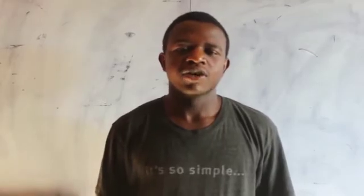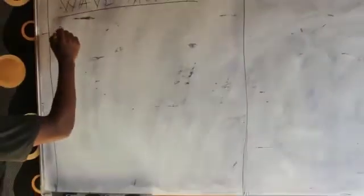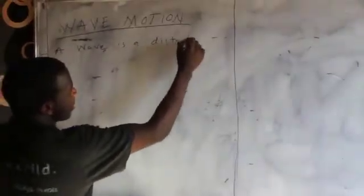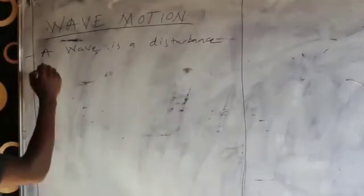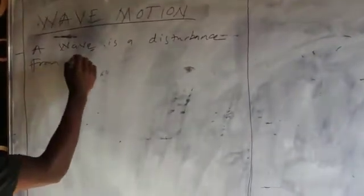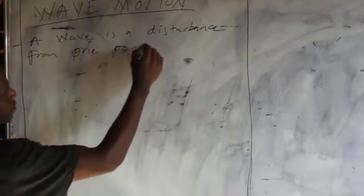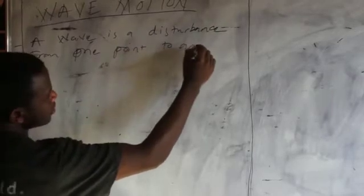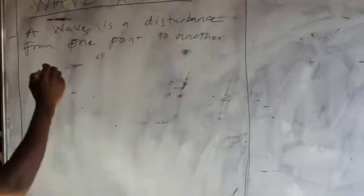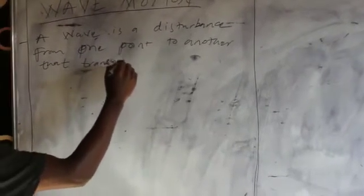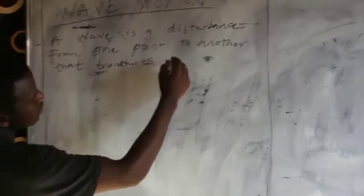So let me write these points on the whiteboard. I've said the definition of the wave: a wave is a disturbance from one point to another that transmits energy.